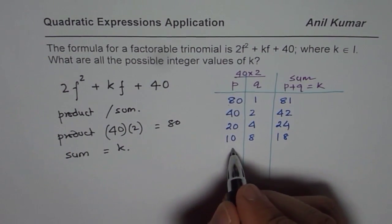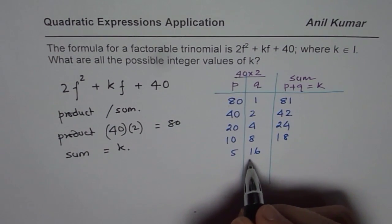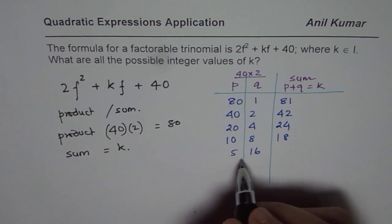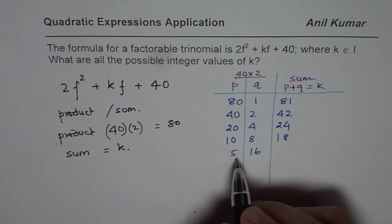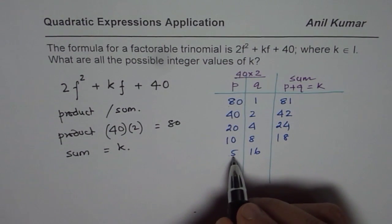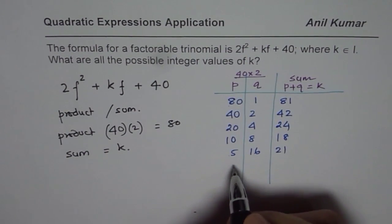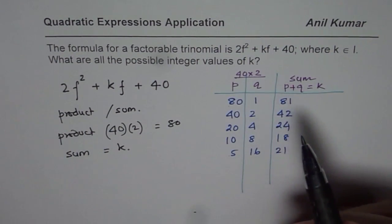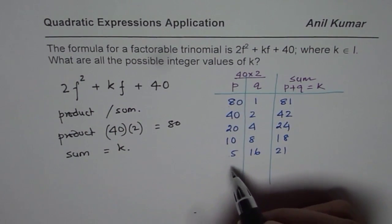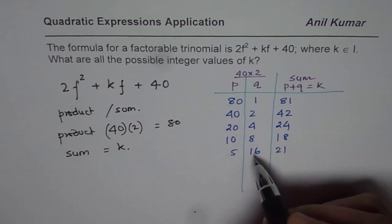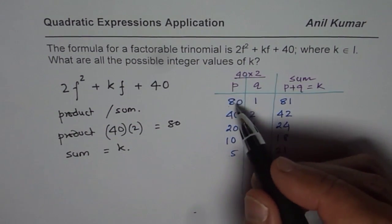You can continue with this list: 20 times 4 gives us 24 as the k value; 10 times 8 gives 18; and 16 and 5 — when you add them up you get 21. So if you continue like this you will get a lot of numbers, but you have to list all of them. Now we can look into other combinations.